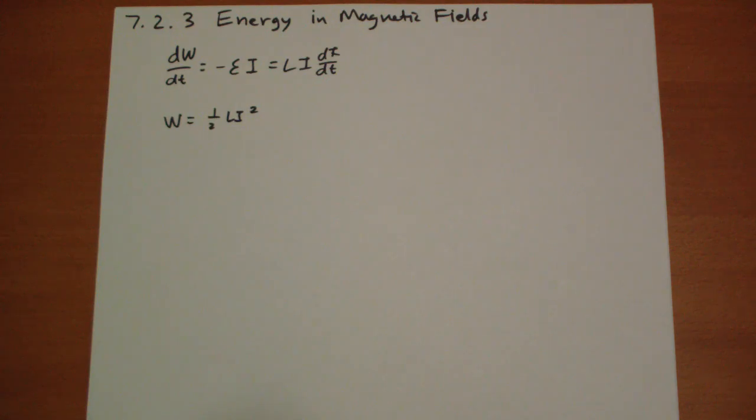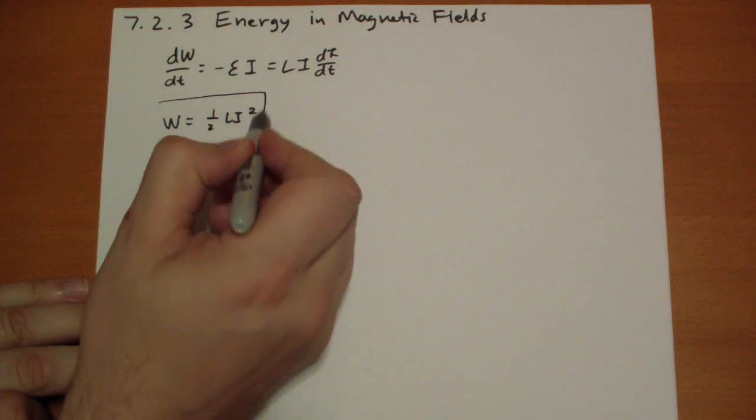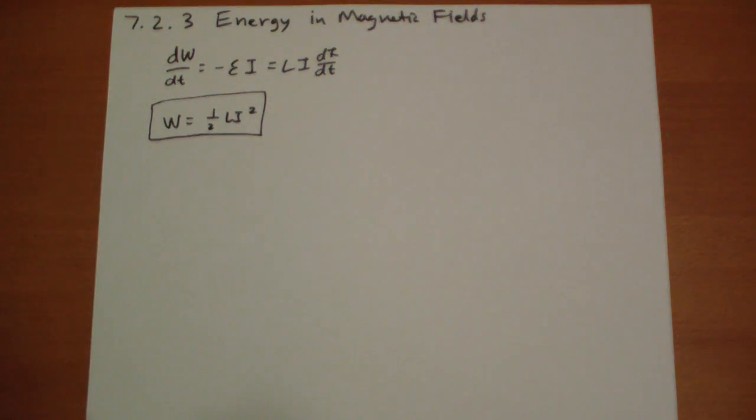So the higher the inductance, the more work it requires to build up a current. The higher the current, it takes more work according to the square of that current to build up that current. So this is one of those equations you put in a box and hold on to it for a very long time.